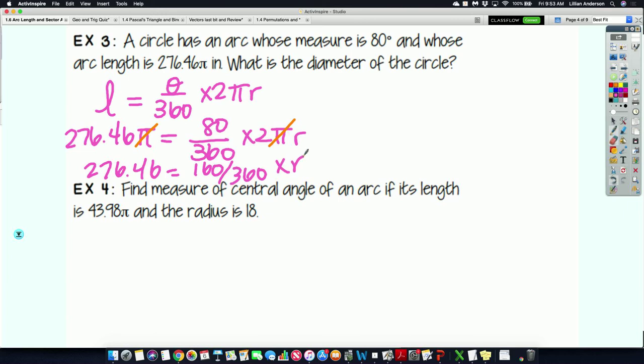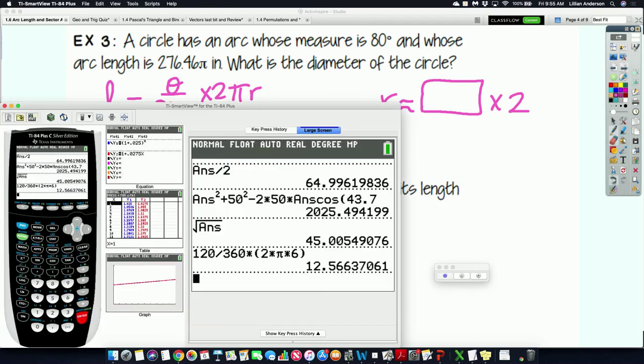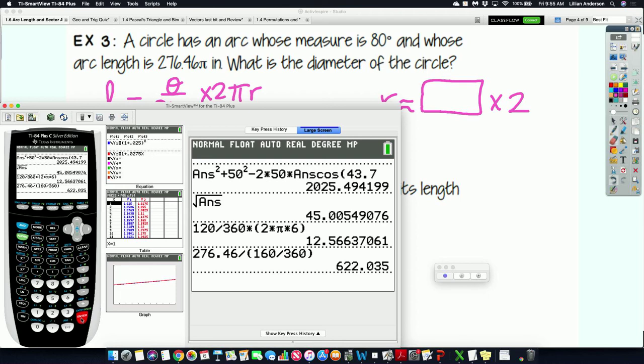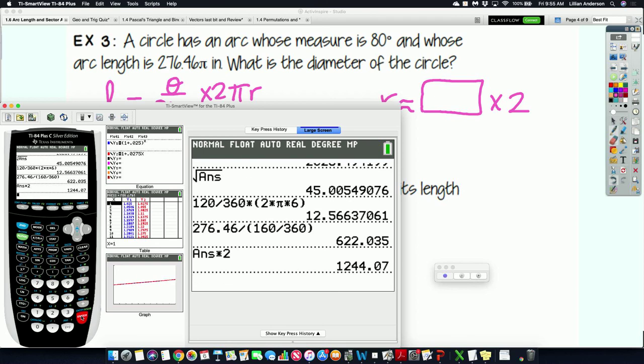Now, do you have to do all the simplifying before finding the radius? No, you don't have to. But seeing this, now all I need to do is take 276.46 and divide it by that fraction of 160 over 360. So find my radius. So we have 276.46. I need to divide that by 160 over 360. Put it all in front so the calculator knows I'm going to divide that 276 number by that full fraction. You guys get that? So there's my radius. Now all I need to do to find my diameter is multiply it by 2.